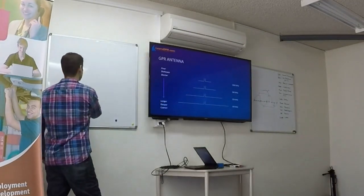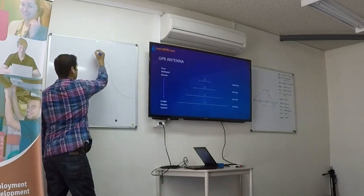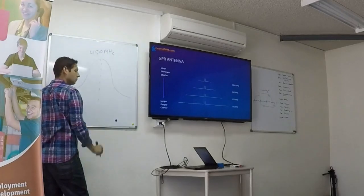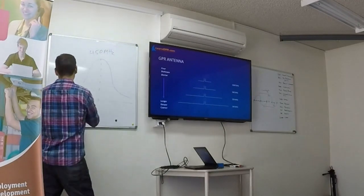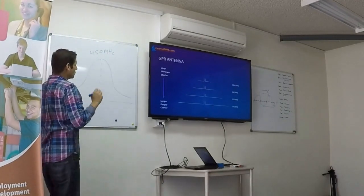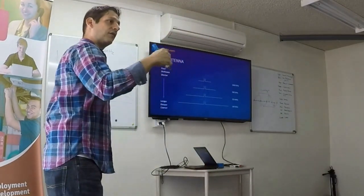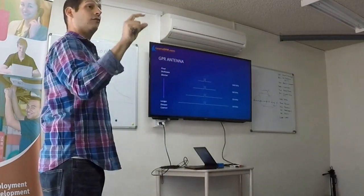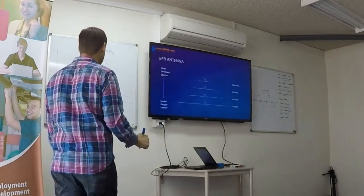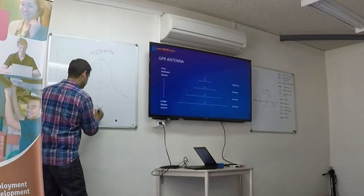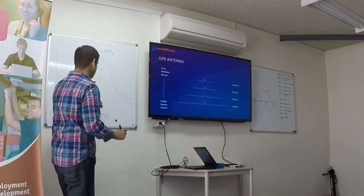So maybe you were never told this before. So when you put out a pulse, the 450 or whatever number they give you for your antenna is just known as the central frequency. Central frequency.